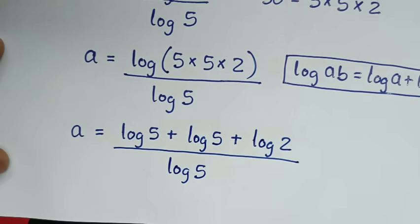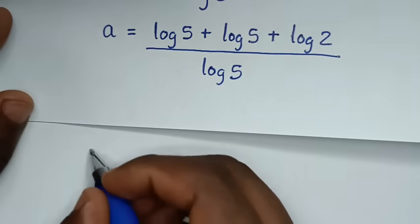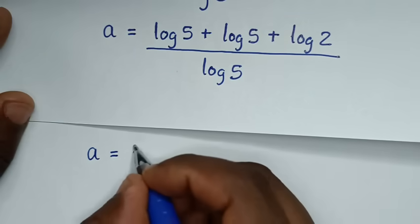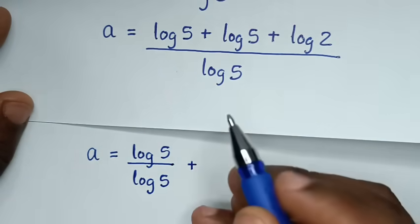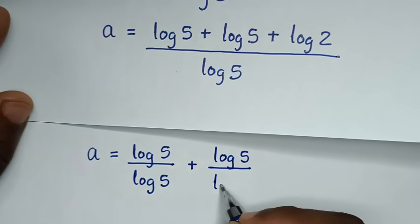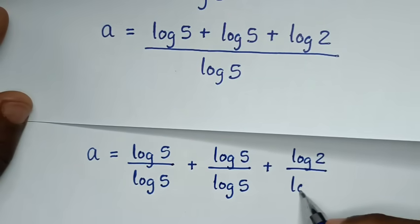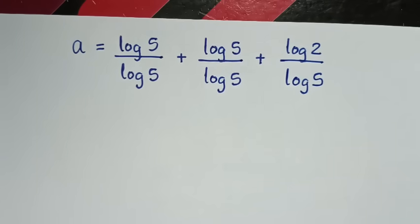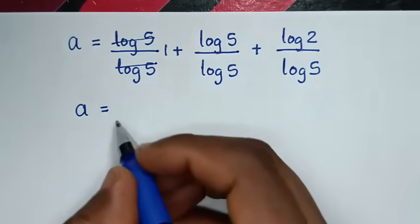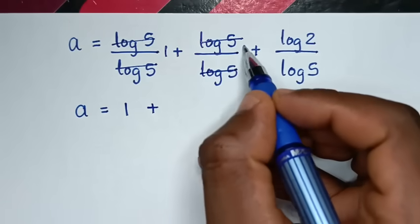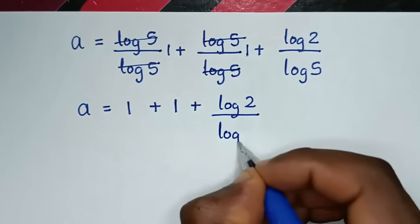Then in the next step we'll divide each term by log of 5. So it will be log of 5 over log of 5, plus log of 5 over log of 5, plus log of 2 over log of 5. Now to simplify: log of 5 over log of 5 is 1, so plus 1, then plus 1, then plus log of 2 over log of 5.